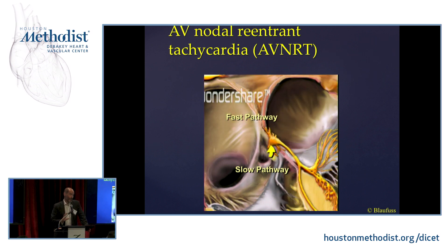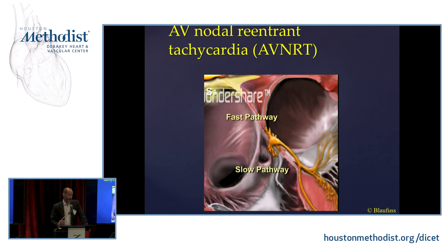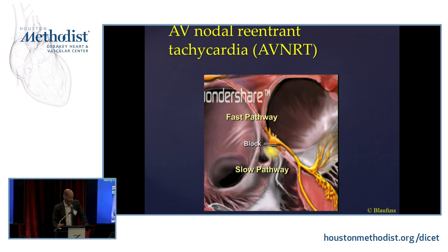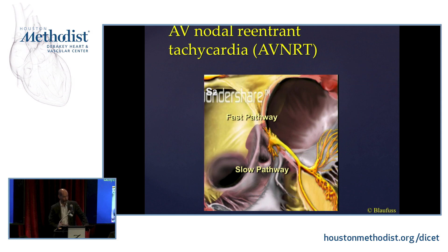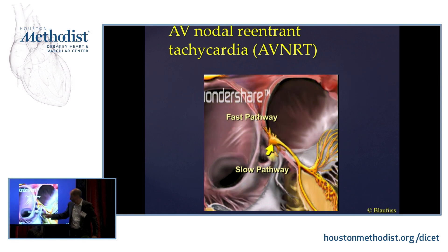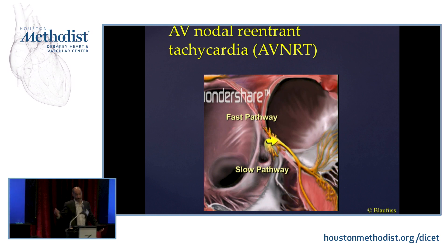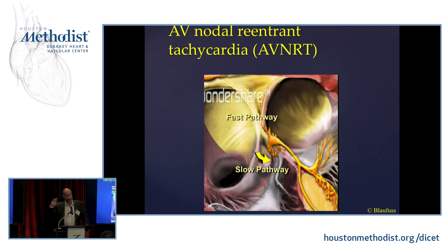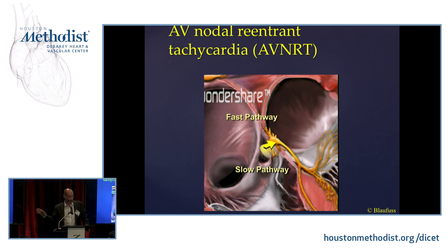Is it truly AV nodal? Not really — it's the perinodal tissues around the compact AV node. This allows us to cure it. How do we cure it? We burn the slow pathway. The slow pathway is anatomically in a distinct area separate from the fast pathway, so when we burn it, we take care of it.